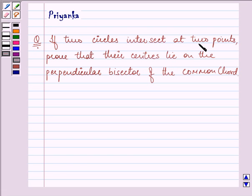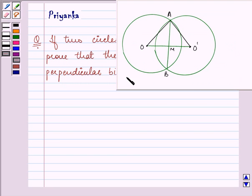The question says if two circles intersect at two points, prove that their centers lie on the perpendicular bisector of the common chord. Now this is the figure that will help us in proving the question.